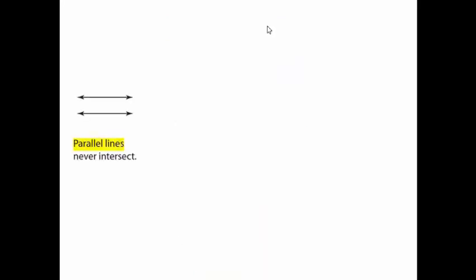The first type is parallel lines. Parallel lines will never intersect. Like your notebook's lines — they will never intersect. They are parallel lines. Like the lines in your notebook, you will find all parallel lines. Parallel lines do not intersect.